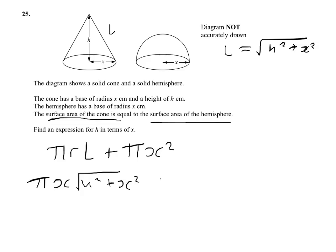And then of course we've got the plus pi x squared for the base itself. So that is our surface area of our cone.